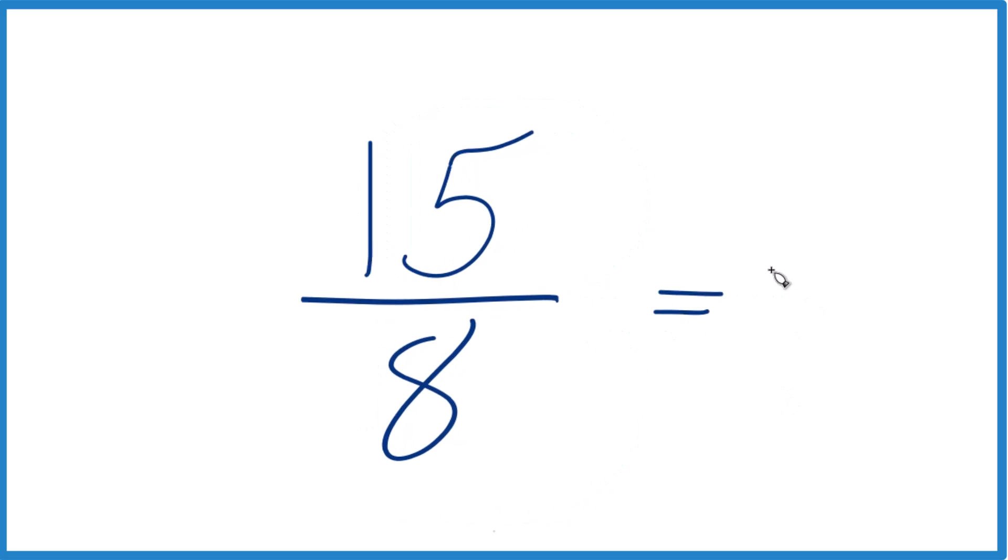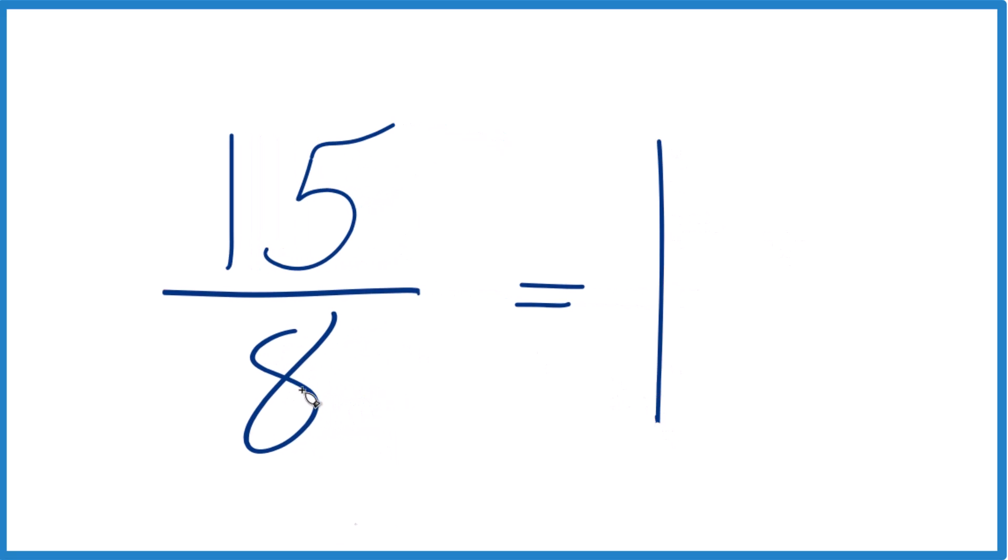Let's see, 8 goes into 15 one time. One times 8 is 8, and then we'd have 7 left over. So we'll put 7 here and then we just bring the 8 across.